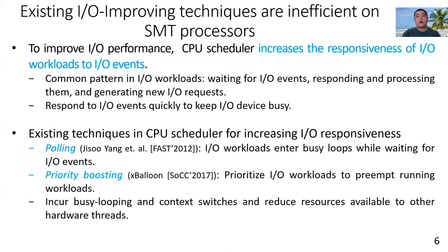However, on SMT processors, busy looping and context switches incurred by priority boosting can greatly reduce resources available to other hardware threads.